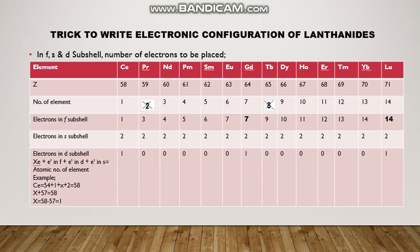The formula used is: atomic number of xenon (54) + electrons in F + electrons in D (to be calculated) + electrons in S (which is 2) = atomic number of the element. For example, cerium: 54 (xenon) + 1 (in F, from the table) + X (electrons in D) + 2 (in S) = 58. X + 57 = 58, so X = 1. It means 1 electron is in the 5D subshell for cerium.